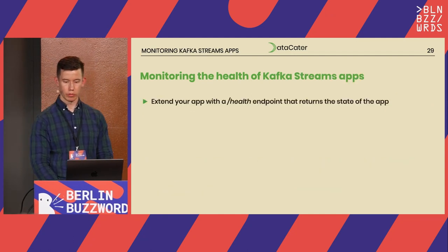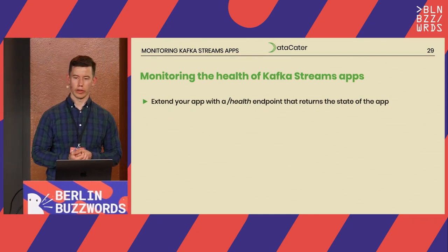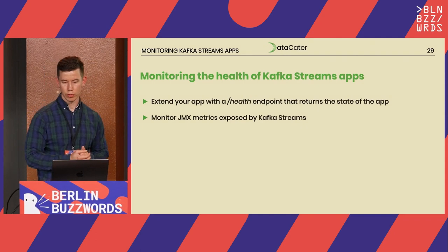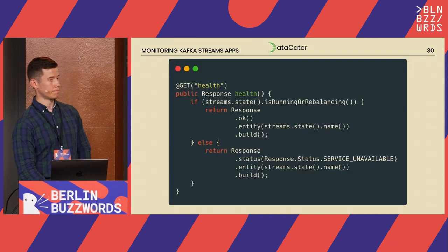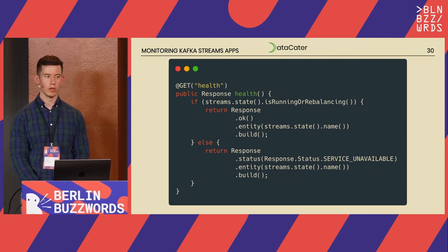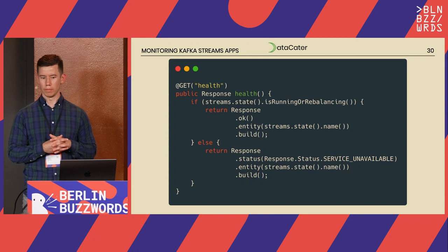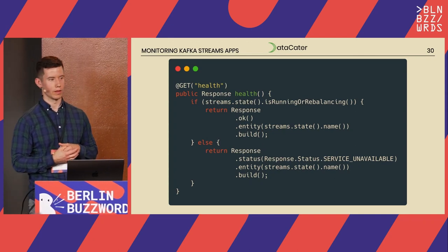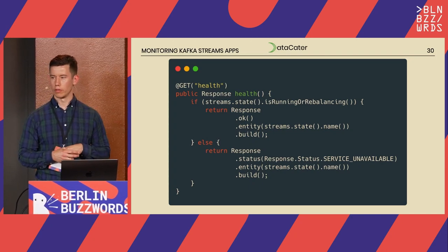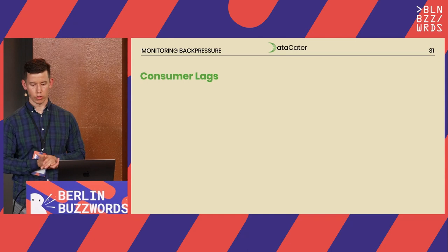For monitoring Kafka Streams applications, you can extend your application — which is a regular Java application — with a custom health endpoint that returns the state of the Kafka Streams instance. Kafka Streams maintains the application state in memory; if it is in a running or rebalancing state, it is considered healthy. You expose that state in a health endpoint and then let your orchestration system like Kubernetes query it via liveness and readiness probes. Kafka Streams also exposes JMX metrics.